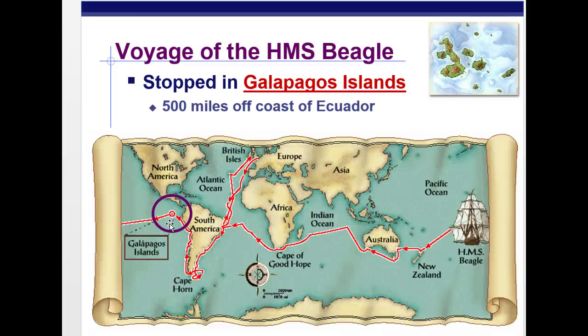The Galapagos Islands, since they're so isolated — they're volcanic islands right off the coast of South America — are like a little isolated natural laboratory. Once those islands sprung up volcanically, they started getting populated with organisms that came from the mainland. Obviously there'd be organisms that could swim or fly there, but terrestrial organisms arrived by floating chunks of land, which was known at the time.